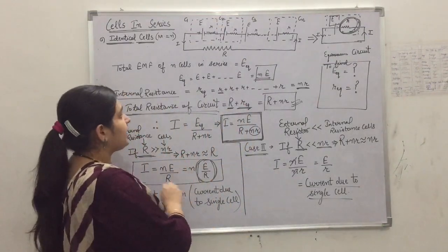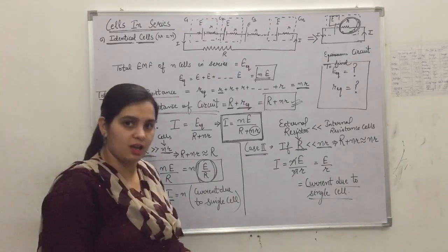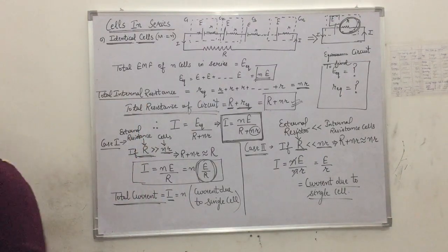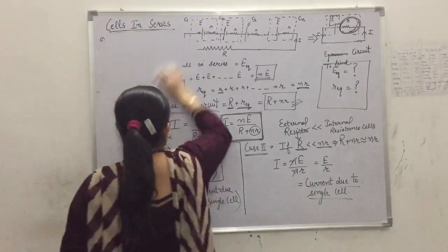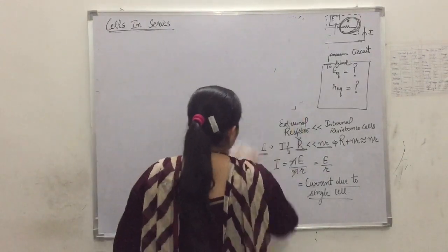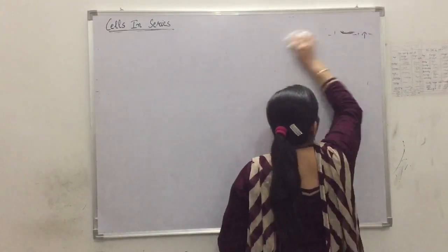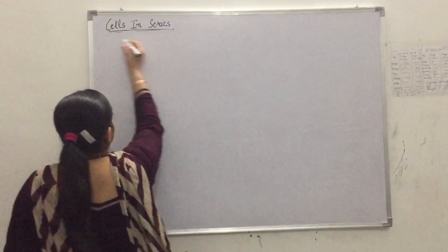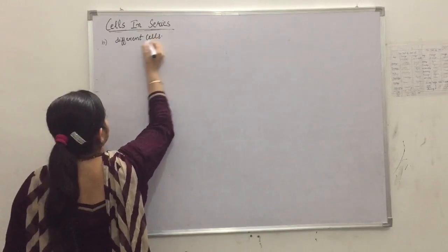So in this case we learned what happens when identical cells are connected in series — the equivalent EMF, total internal resistance, and total current. Now we have to connect different cells. To generalize for different cells, we will consider only two cells for simplicity and then generalize the result for n cells. This is part B: when different cells are connected in series.